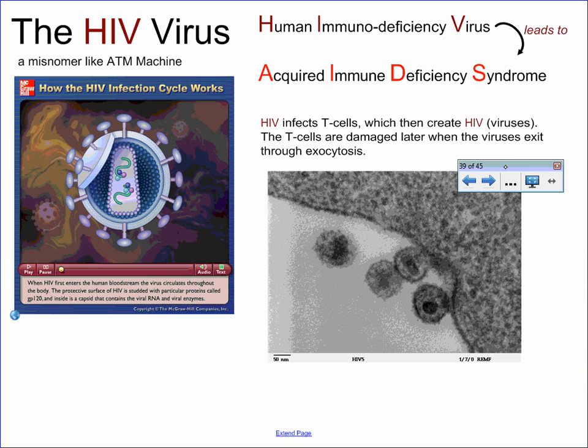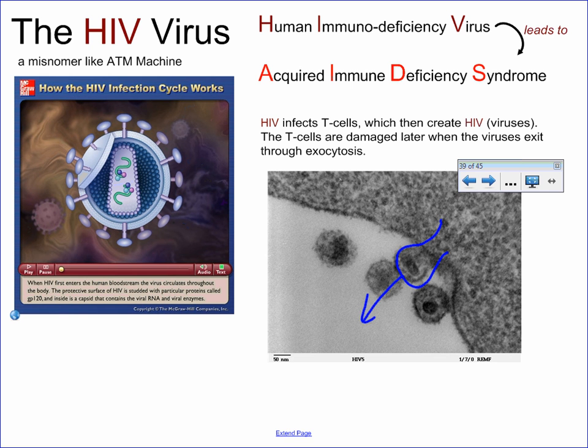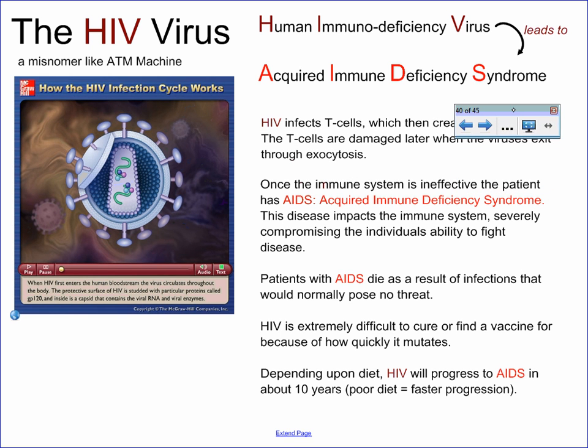The HIV virus is the pathogen that gives you acquired immune deficiency syndrome, and it infects your T cells in a rather insidious way. When it moves past the macrophage infection point to the T cell infection point, the process of exocytosis actually bursts the cell open, destroying the T cell. This can progress to AIDS over a number of years depending on diet. People with AIDS usually die of a non-lethal infection that they simply no longer have the immune response to combat.